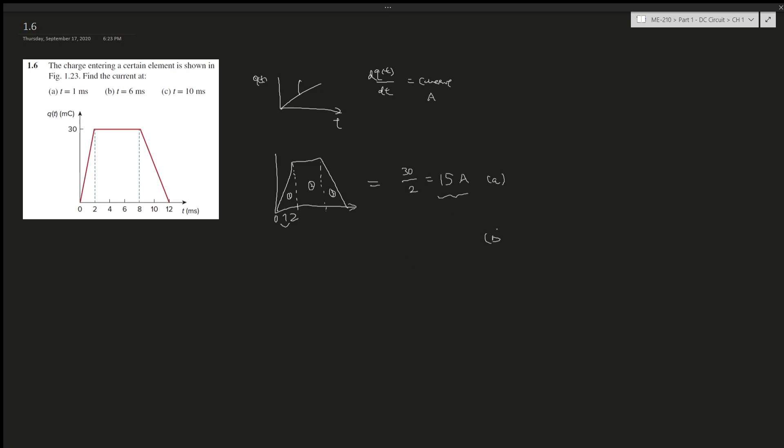And for part b, we're trying to find the slope. The rise is zero - it's not changing. It's a constant horizontal line. The change is zero, which means the change of q over t, dq/dt - the slope - is equal to current. Well, the change is zero, therefore the current is also zero. And then the last section,